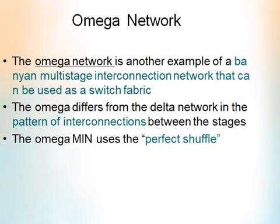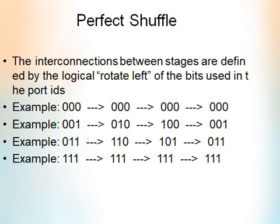So what is exactly the perfect shuffle property? The interconnections between stages are defined by the logical rotate left of bits used in the port IDs. For example, if you are taking 000 as the port ID, there are no 1s, so in four stages 000 remains the same.